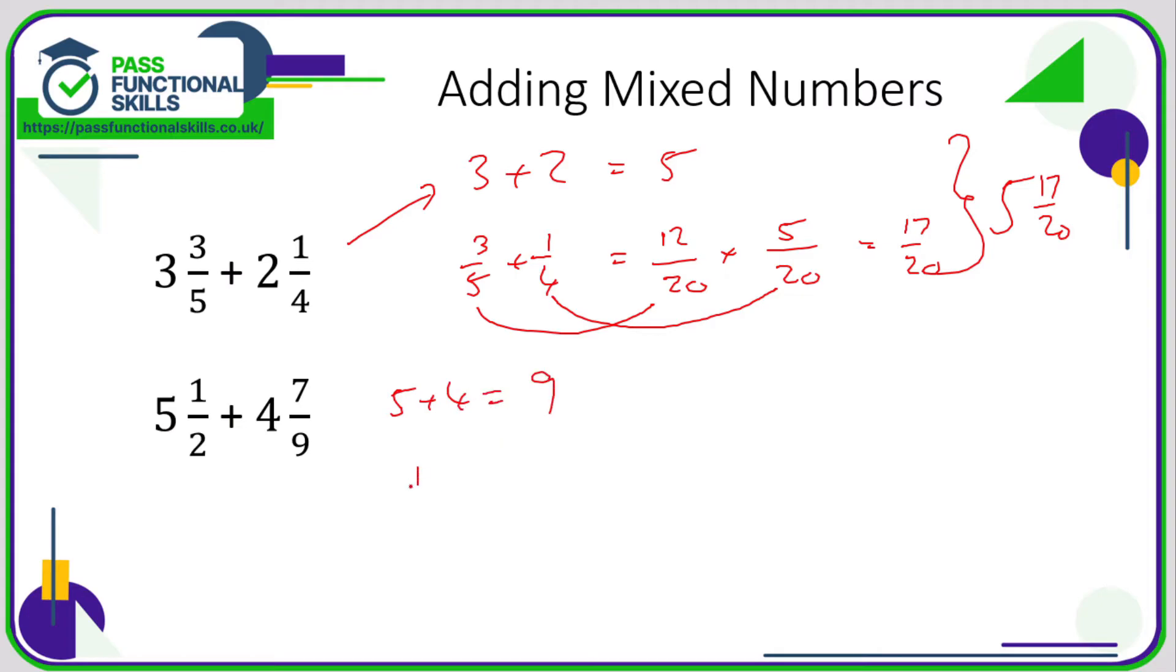With this next example, let's just do 5 plus 4 is 9. One half plus 7 ninths, I'm going to convert these into 18ths. 7 out of 9 is the same as 14 out of 18, just doubling the top and the bottom. And a half is the same as 9 out of 18, multiplying the top and the bottom by 9. And 9 plus 14 is 23 eighteenths. We could combine these into 9 and 23 eighteenths, but this looks a bit weird because we've got a top heavy fraction here. 23 eighteenths, that is the same as 1 and 5 eighteenths. So this number is 9 and 1 and 5 eighteenths. So again, let's just combine the whole numbers: 10 and then the 5 eighteenths.